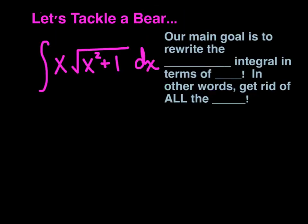Here's our first live example. What you'll notice is if you covered up the integral and pretended we were supposed to derive, you'd say I would need product rule. And as I'm deriving using the product rule, I would use the chain rule to derive this term right here. So you see the need for chain rule, which clues us into the fact that as we integrate, we're going to need a u-sub. By definition, we define x squared plus 1 as the inner function — it's the function being raised to the one-half power, or the square root of it.